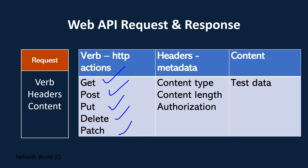Coming to the headers — these are sample headers like content type, which tells the server the type of content being requested, such as JSON or XML. Content-Length indicates the length of the request content. The authorization header is used when you are sending an authorization token to the server. We will work with these in the series.